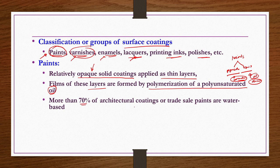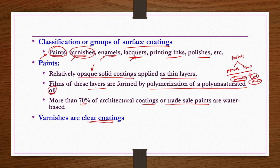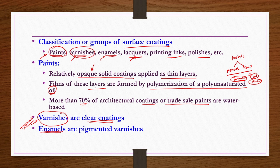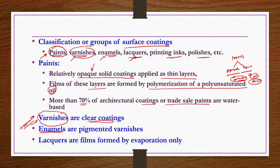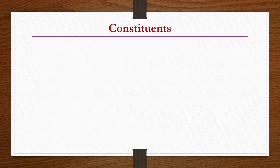More than 70 percent of architectural coatings or trade sale paints are water-based. Varnishes are clear coatings without any pigments — mostly natural, though synthetic varnishes are also available. If you add pigments to varnishes, the resulting surface coating product is known as enamel. Enamels are pigmented varnishes, whereas lacquers are films formed by evaporation only.